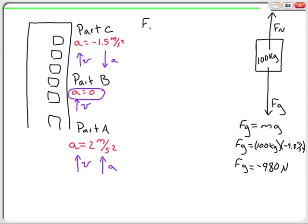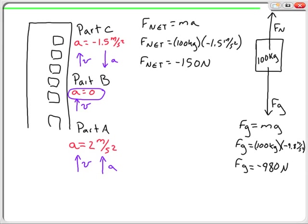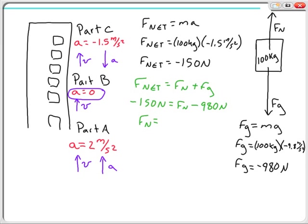For Part C, we start the same way: F net equals mass times acceleration. F net equals 100 kilograms multiplied by negative 1.5 meters per second squared, so F net equals negative 150 newtons. Switching to the sum of forces equation: F net equals FN plus FG. Negative 150 newtons equals FN minus 980 newtons. Adding 980 to both sides, FN equals positive 830 newtons.